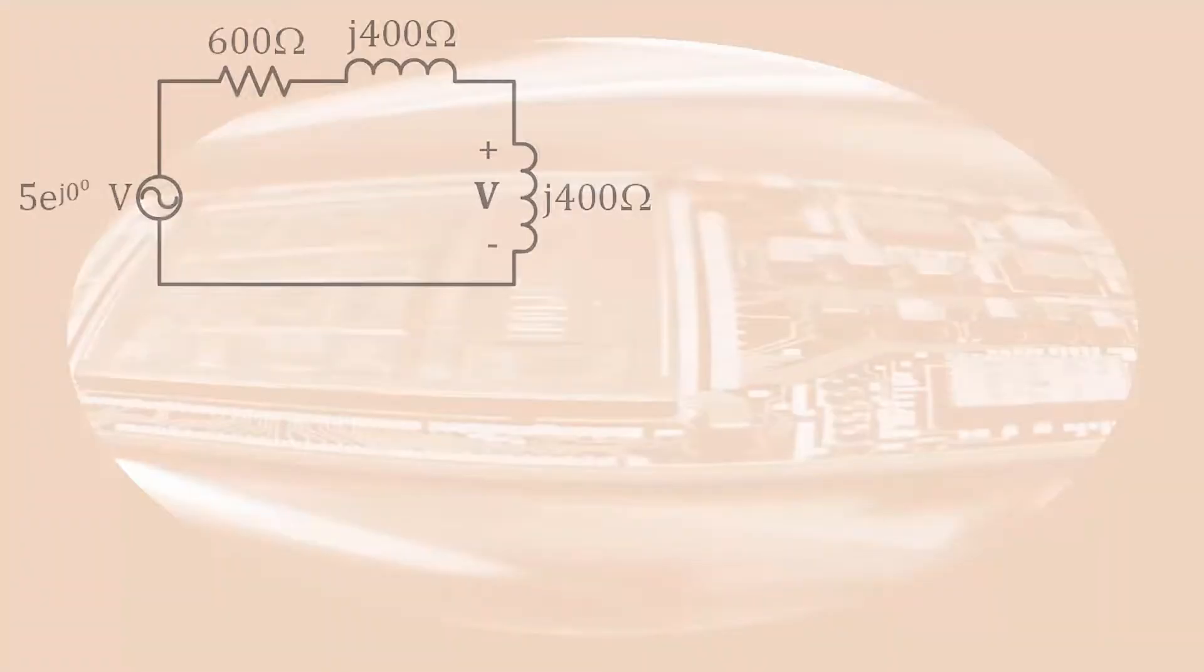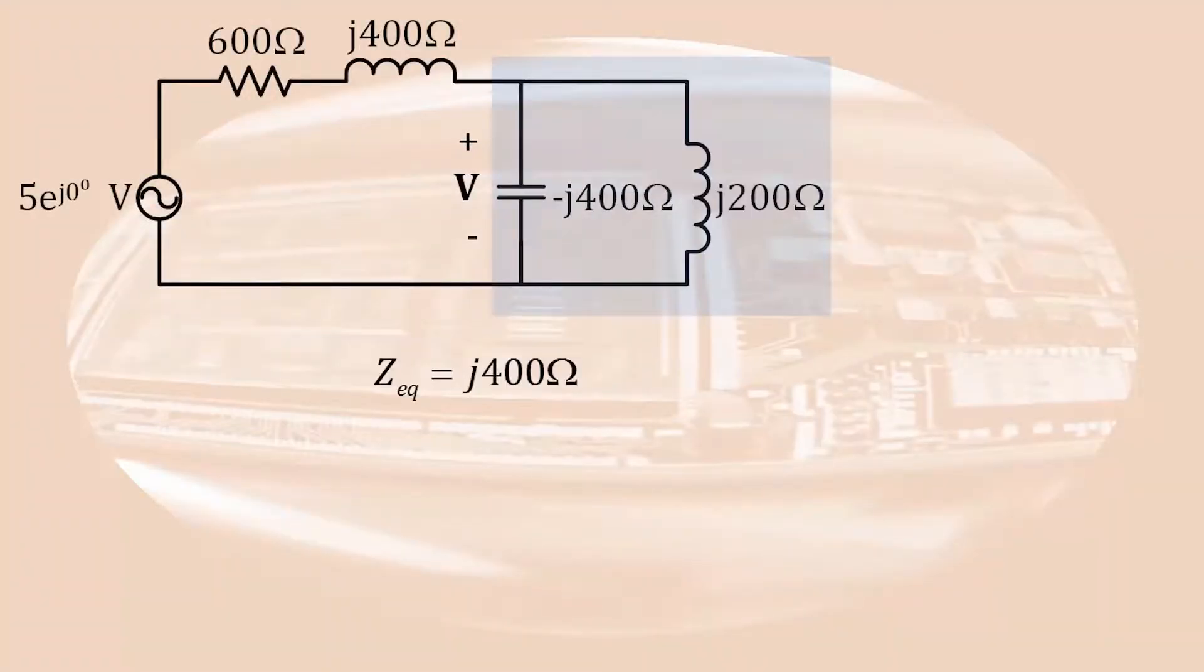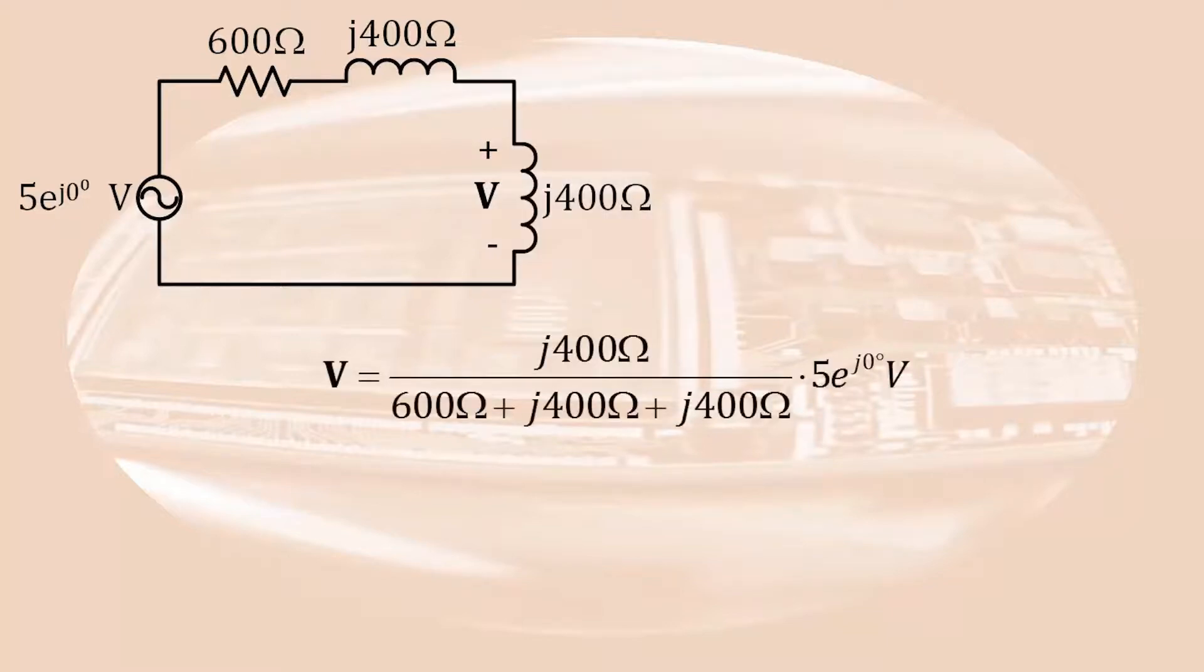Anyway, now we have a circuit with everything in series. The phasor voltage across the capacitor will be the same as the phasor voltage across the parallel combination. To determine the phasor voltage across the J400 ohm impedance, we have to write a fraction. With the impedance we want to know the voltage across over the sum of impedances in series, and multiply that fraction by the voltage seen by the series combination.